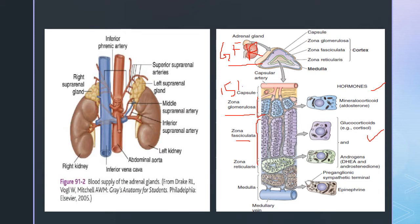The next layer is zona reticularis, the inner zone of the cortex. It secretes the adrenal androgens: DHEA (dihydroepiandrosterone) and androstenedione. As well as small amounts of estrogen and some glucocorticoids can also be secreted from this area.